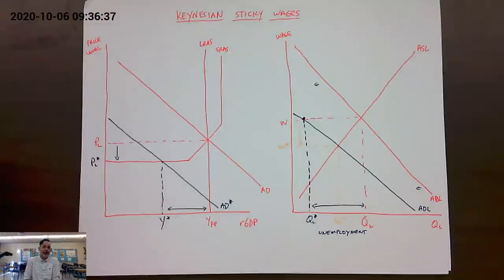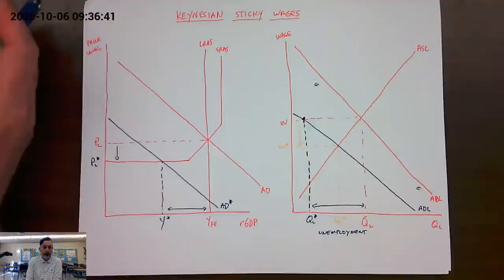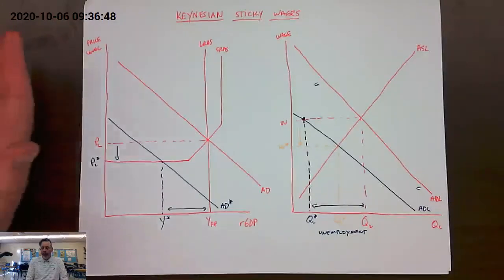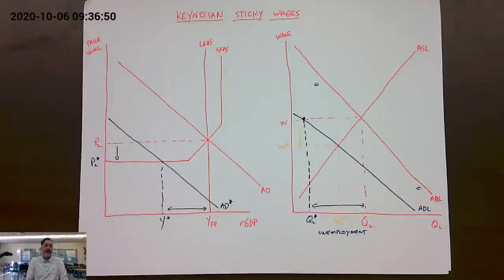we can't see the outward shift of short-run aggregate supply to move us back to our full employment equilibrium. In this particular case, in a demand-side recession, what the Keynesians would argue is that you need a demand-side solution, and their demand-side solution is to attempt to create the government as the spender of last resort. Use the government to move the aggregate demand curve back to the right.